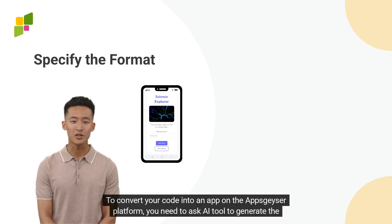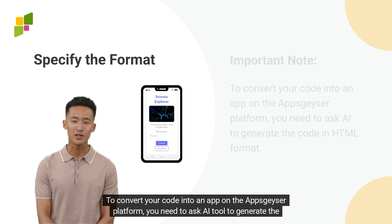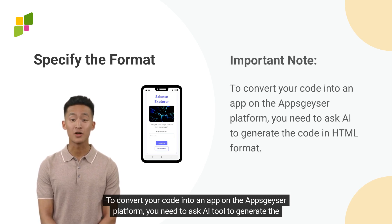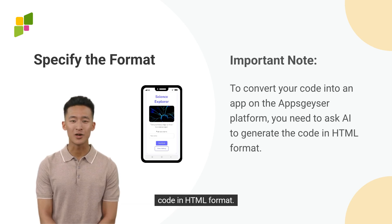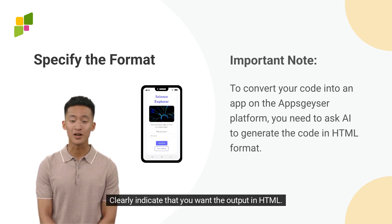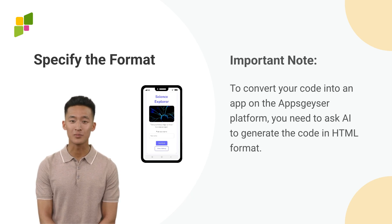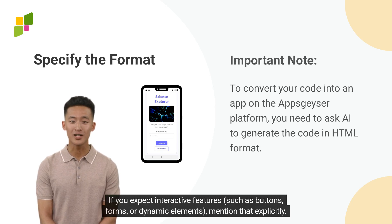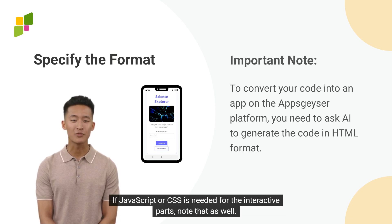Specify the format. To convert your code into an app on the Apps Geyser platform, you need to ask the AI tool to generate the code in HTML format. Clearly indicate that you want the output in HTML. If you expect interactive features such as buttons, forms, or dynamic elements, mention that explicitly. If JavaScript or CSS is needed for the interactive parts, note that as well.